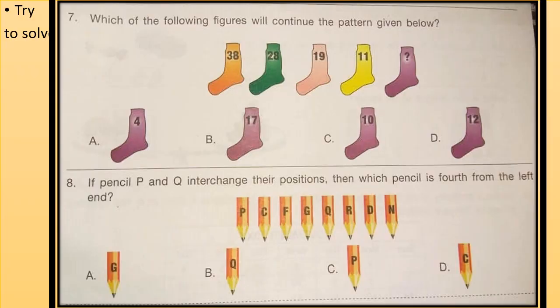There are two questions in this picture. First is which of the following figures will continue the pattern given below. A pattern is given and you have to find the next number in the pattern. Question 8 is if pencil P and Q interchange their positions, then which pencil is fourth from the left end? This is a question from logical reasoning. Interchange the pencils P and Q and then find out which pencil is fourth from the left end.